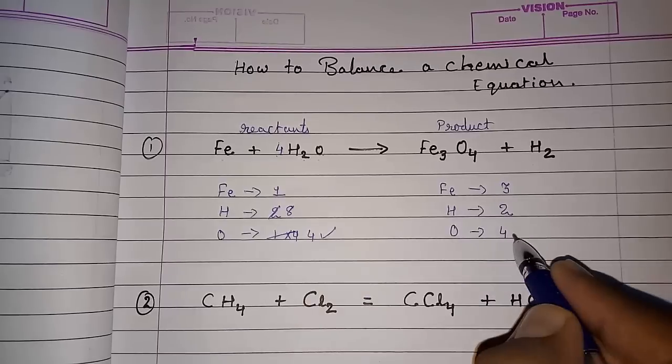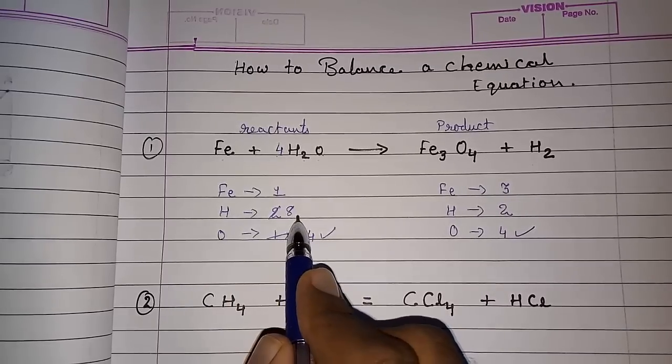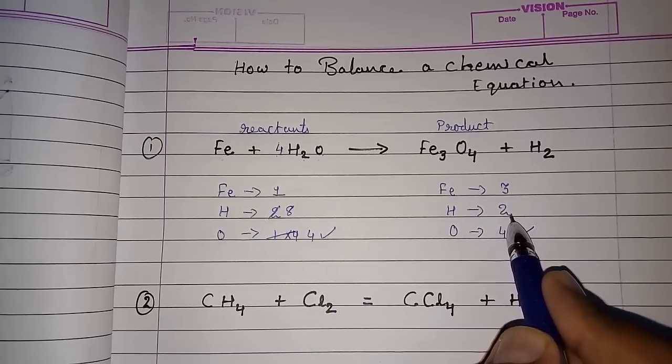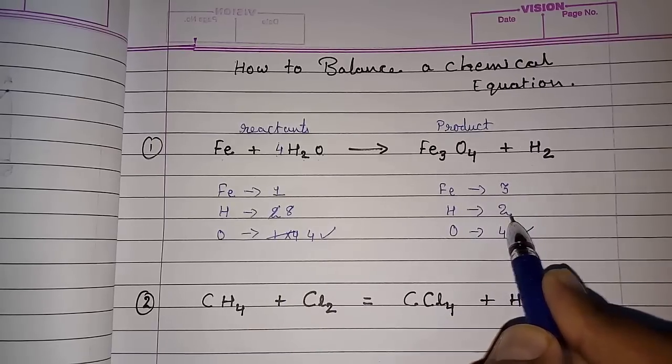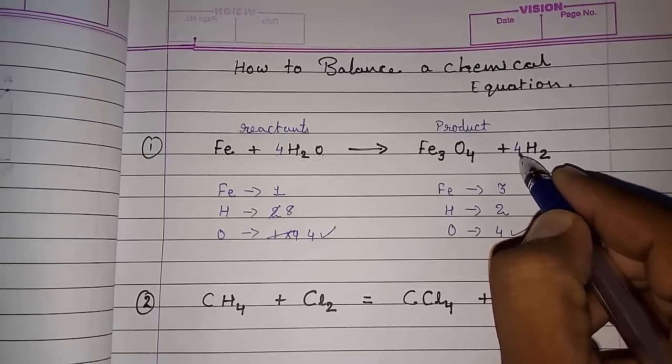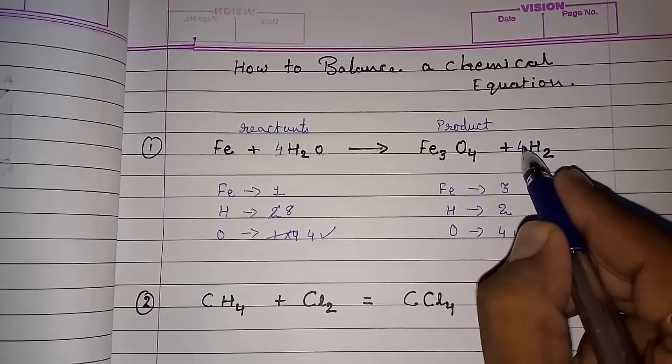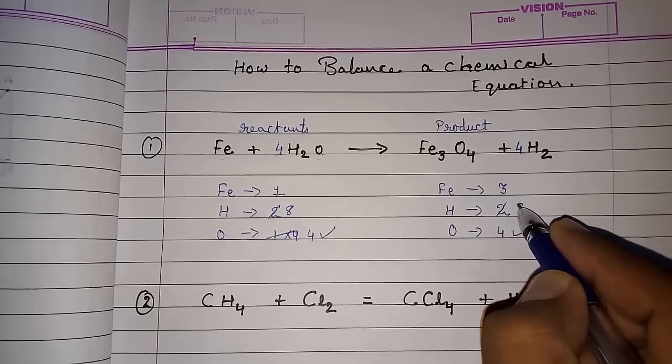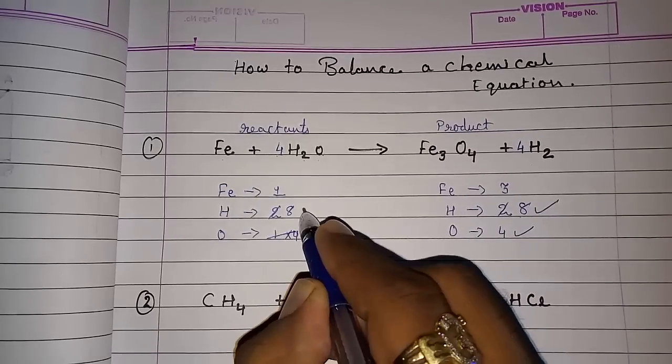Now hydrogen here eight and here two is there. So if I put four here, it will become eight. So four instead of two, it will also become eight. Now they are also same.